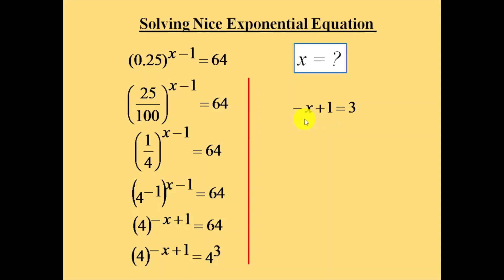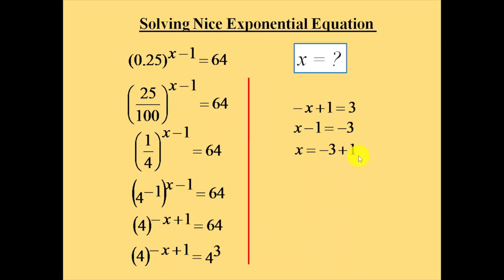So minus x plus 1 equals 3. Multiplying both sides by minus 1, x minus 1 equals minus 3, therefore x equals minus 3 plus 1, which is minus 2. So the value of x is equal to minus 2.